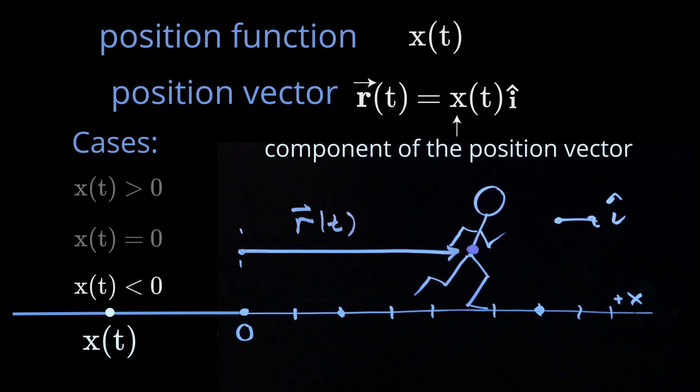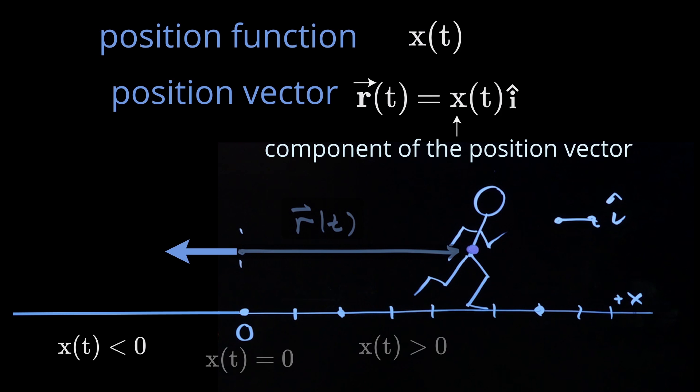So the component of the vector, of the position vector, can be positive, 0, or negative. And the direction of the position vector is the sign of the component times i hat. If the component is negative, then we have a negative i hat. The position vector is pointing backwards in the minus x direction.